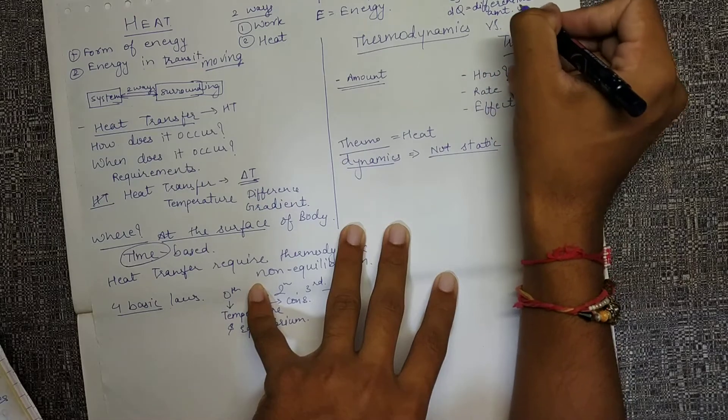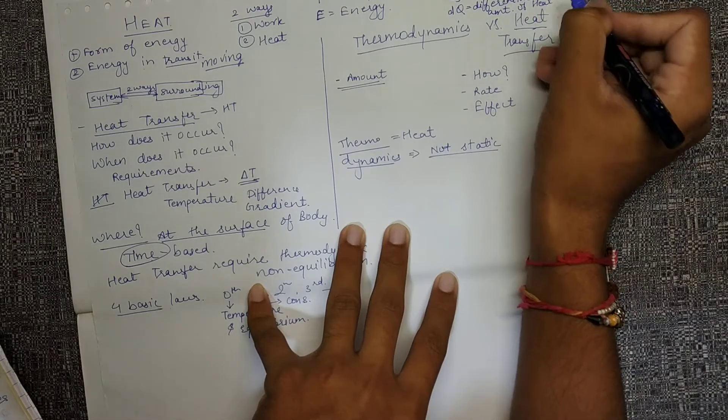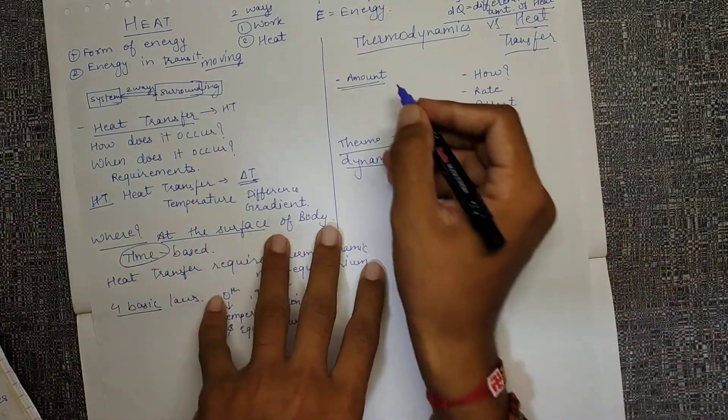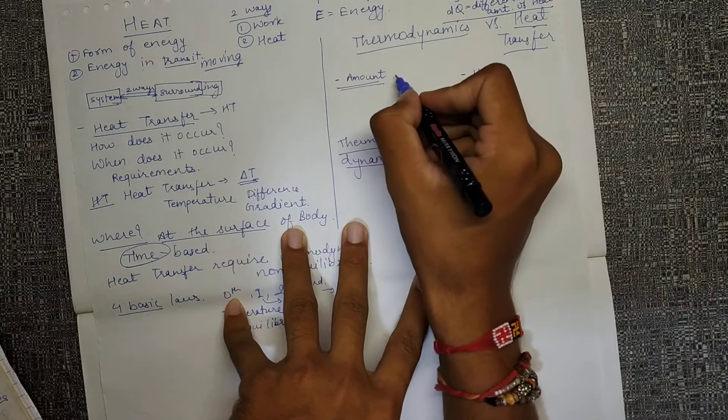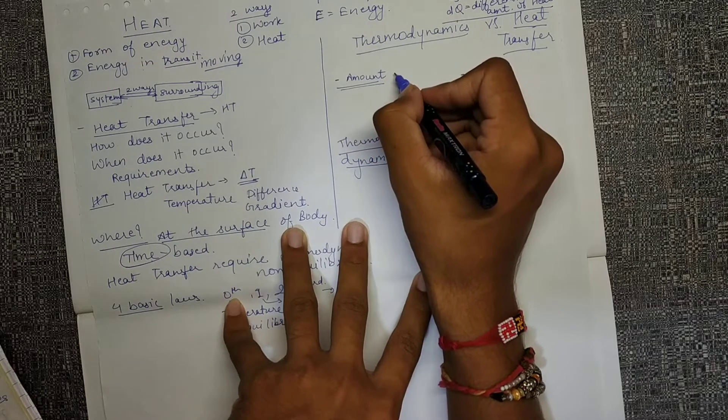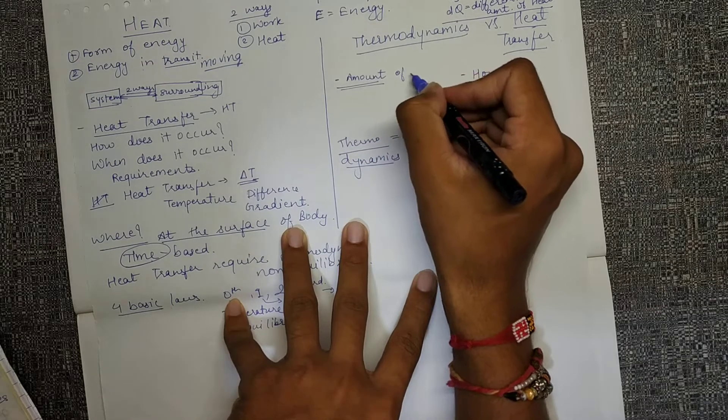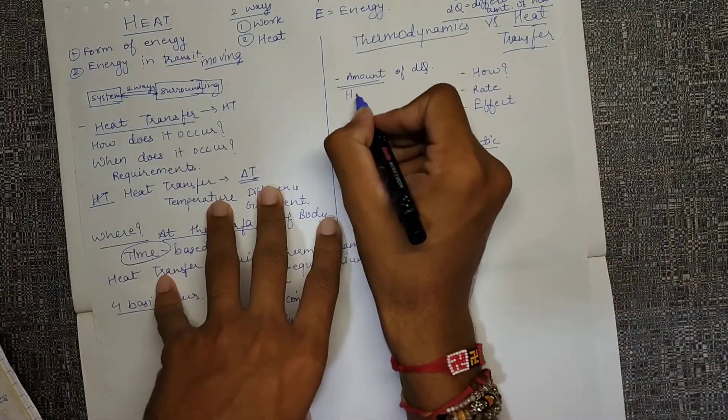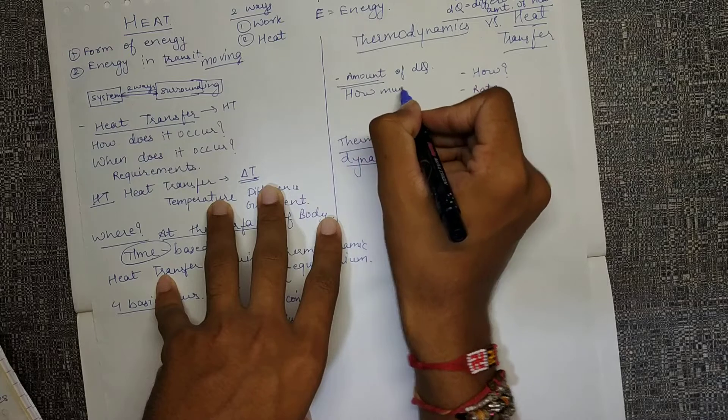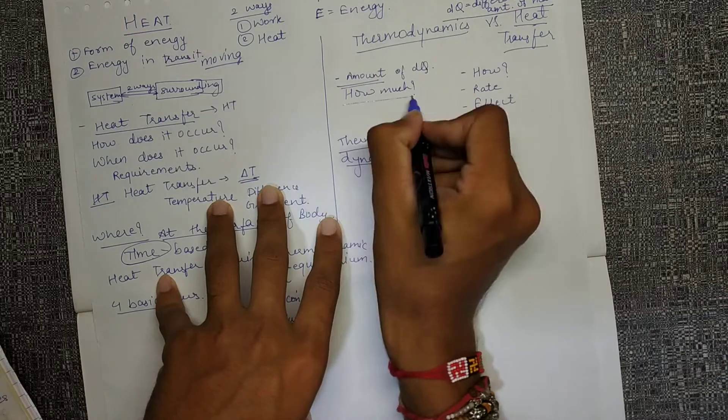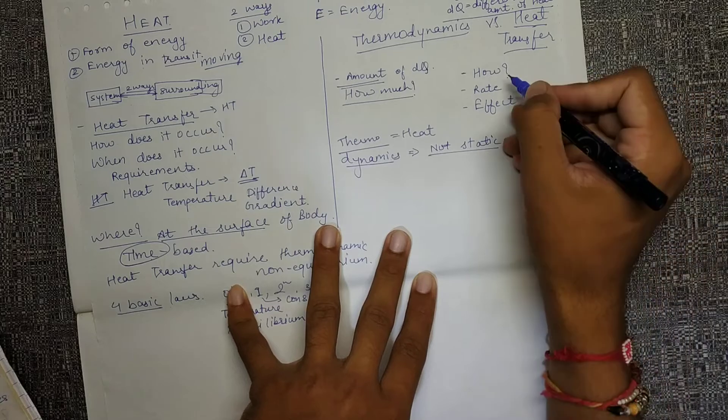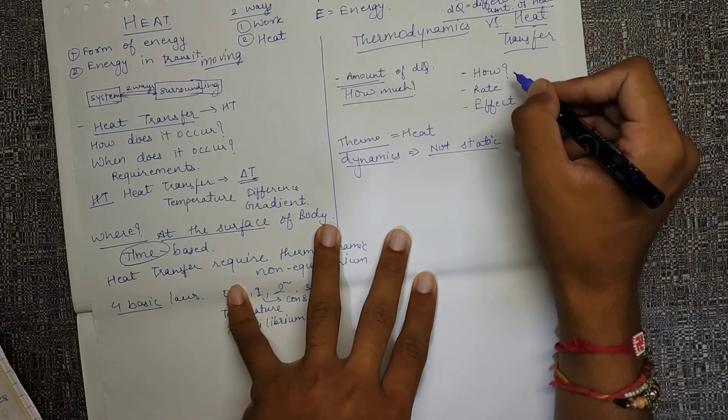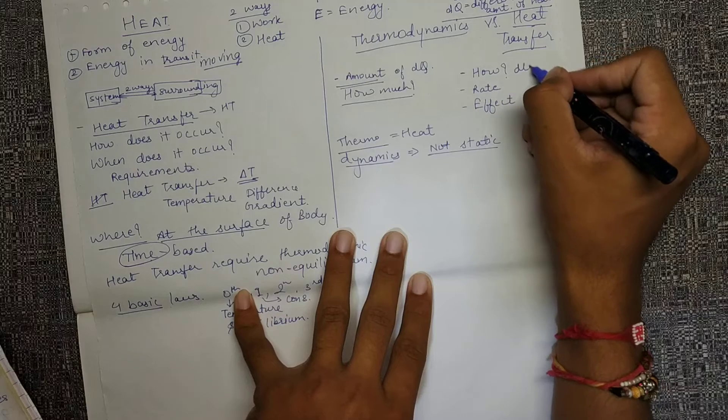Thermodynamics solves the problem relative to finding how much amount of heat is involved, how much heat was transferred. But what was the method? What caused it? Those things are not clear.